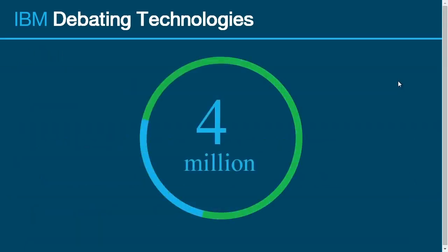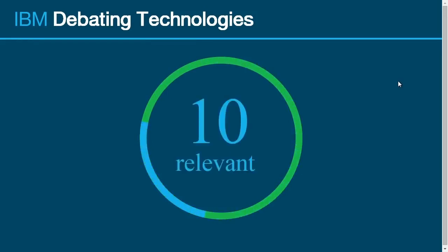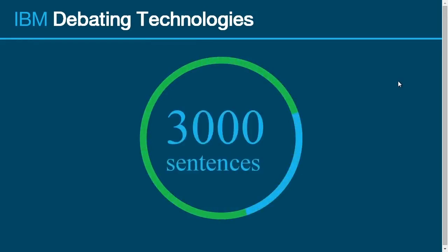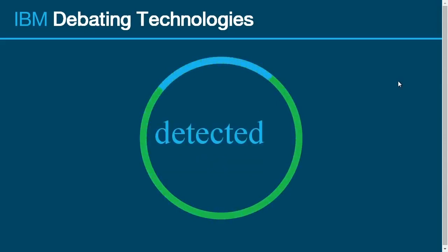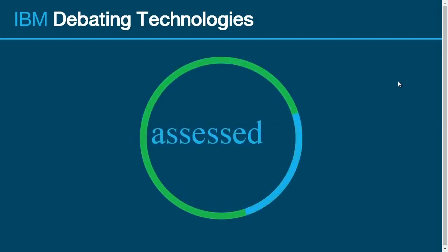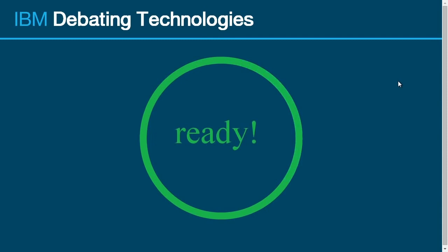Scanned approximately 4 million Wikipedia articles. Returning 10 most relevant articles. Scanned all 3,000 sentences in top 10 articles. Detected sentences which contain candidate claims. Identified borders of candidate claims. Assessed pro and con polarity of candidate claims. Constructed demo speech with top claim predictions. Ready to deliver.